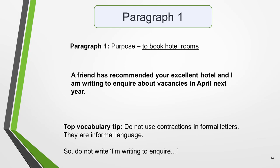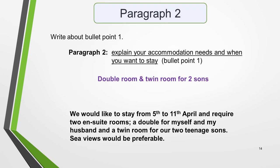Here's a top vocabulary tip: do not use contractions in formal letters — they are informal language. So do not write 'I'm writing to inquire'. In the second paragraph, you write about bullet point 1, which is to explain your accommodation needs and say when you want to stay. My idea for this is that I want a double room and a twin room for my two sons. Remember to keep the language formal. You could write something like this: 'We would like to stay from the 5th to the 11th of April and require two en-suite rooms — a double for myself and my husband and a twin room for our two teenage sons. Sea views would be preferable.'